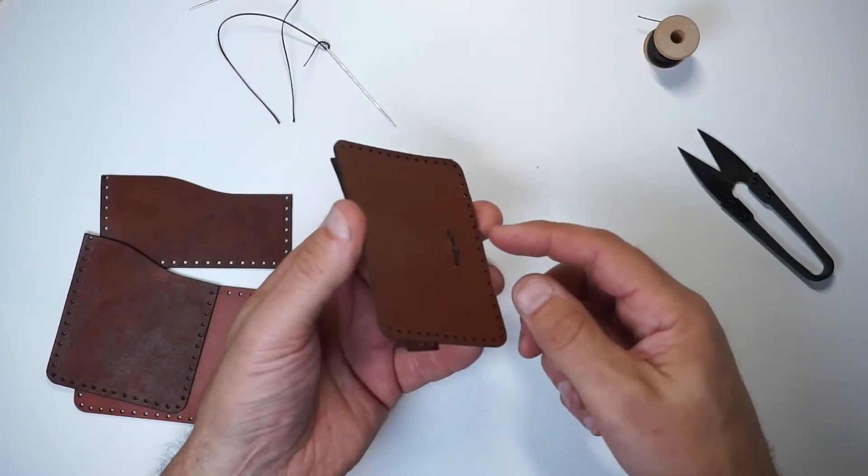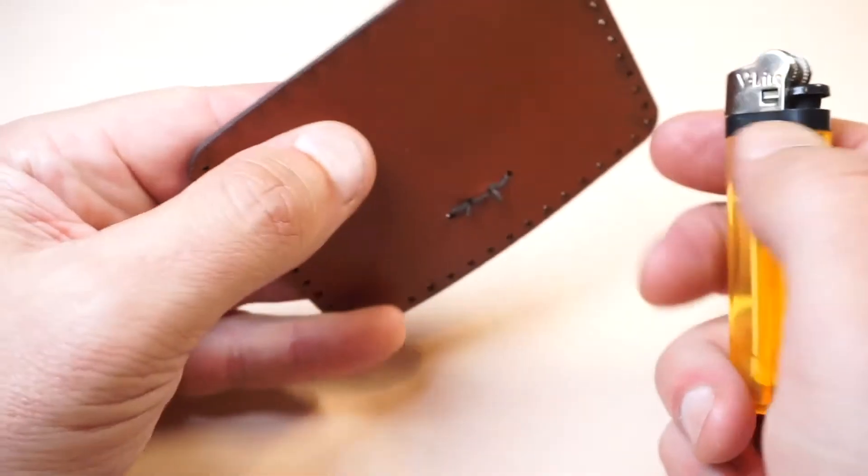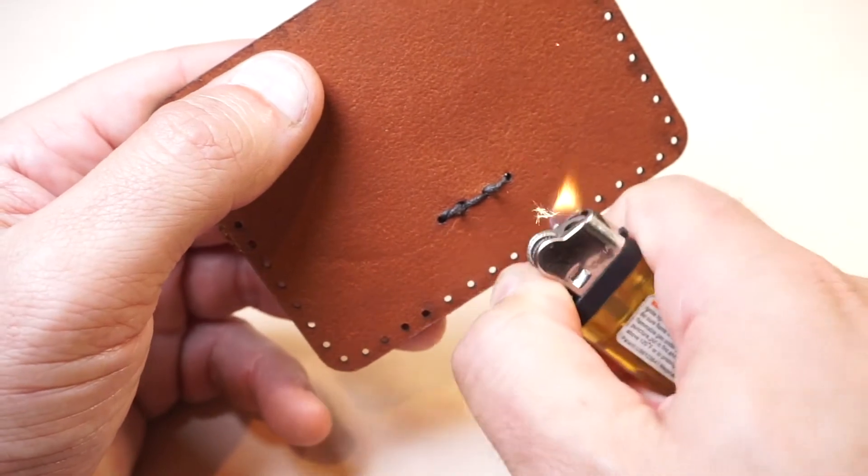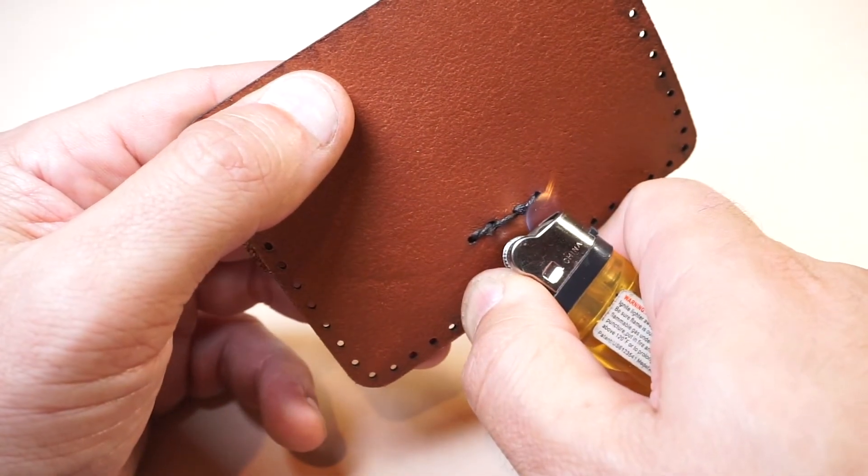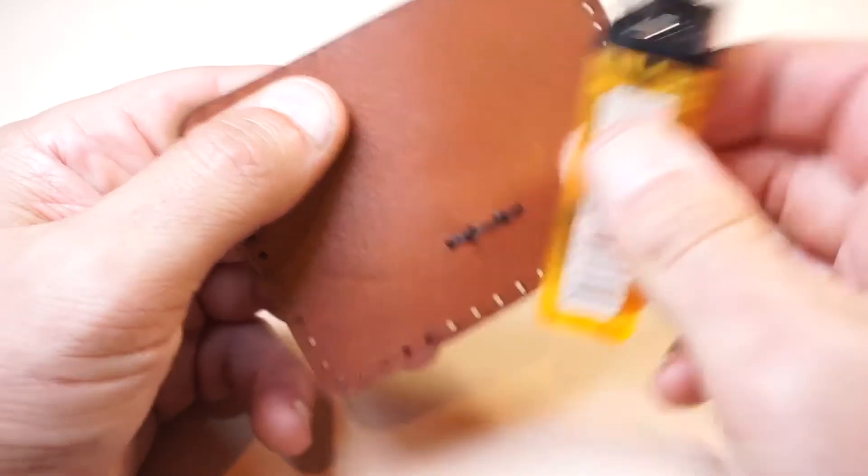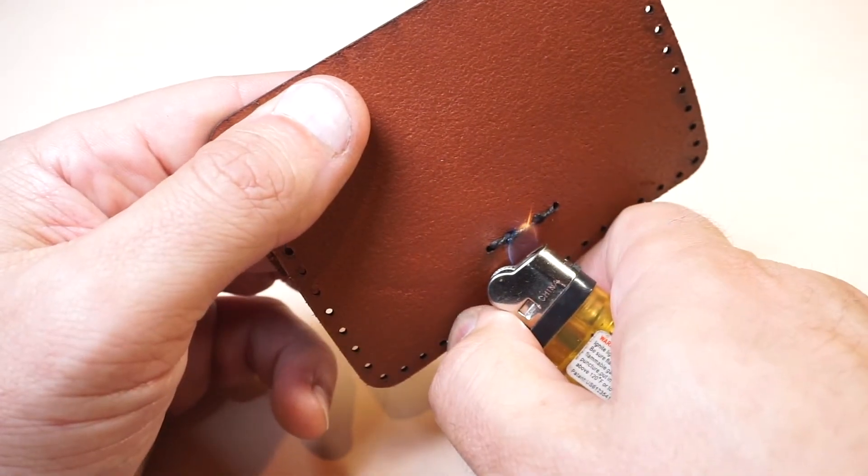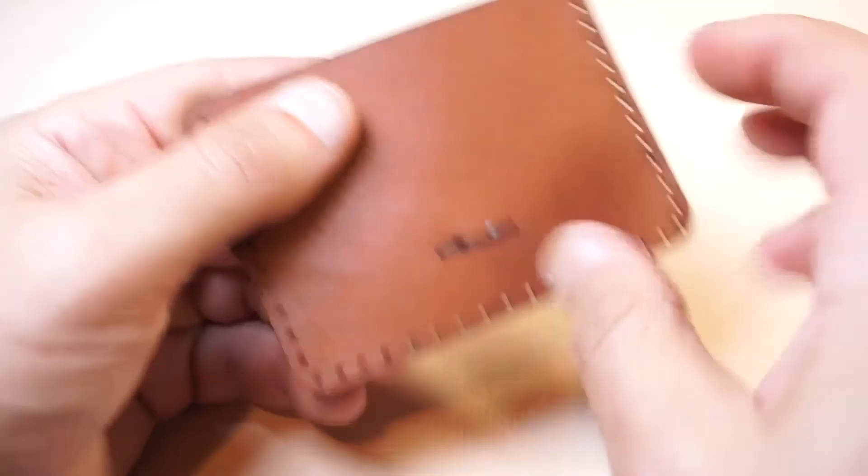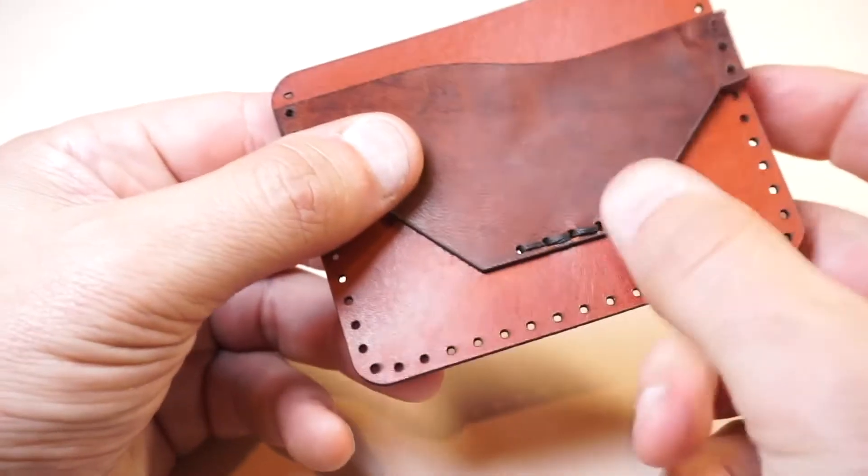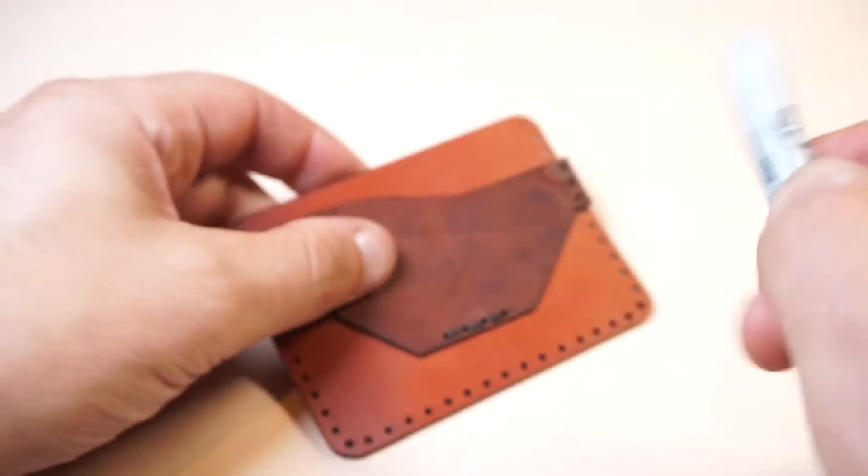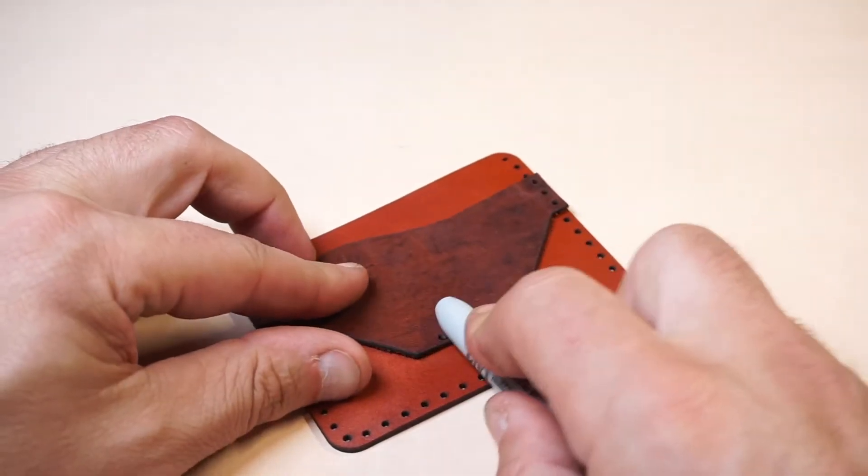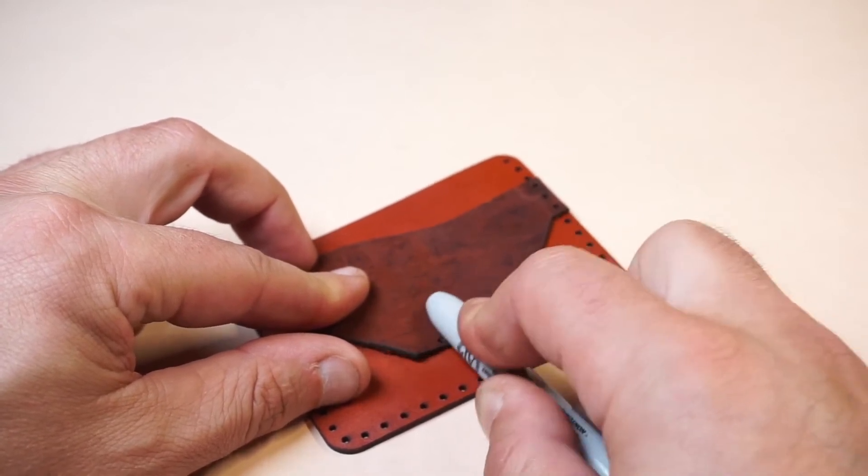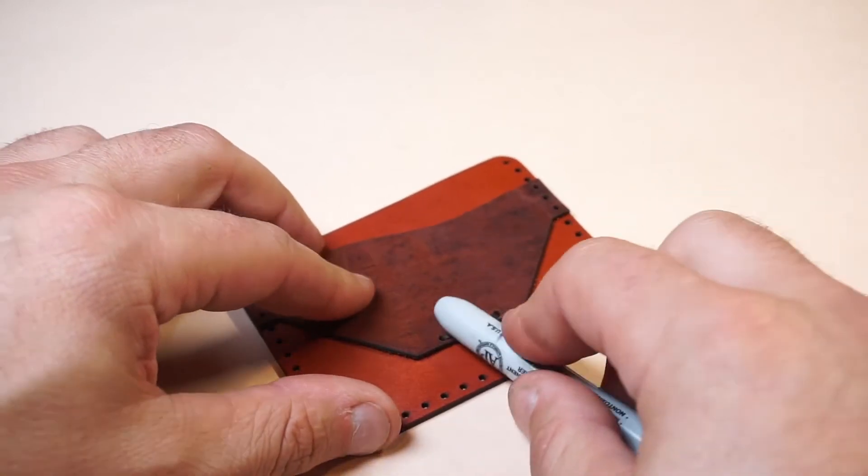So you can see we have maybe an eighth of an inch or so of tail sticking out that we can then melt into that stitch line, and we don't want to burn the leather or the thread. We just want to melt it or heat it up enough so that that wax melts and we can flatten it out. Since this will be hidden and we don't want our cards to catch as they slide by, we can go ahead and really flatten the stitch line up.